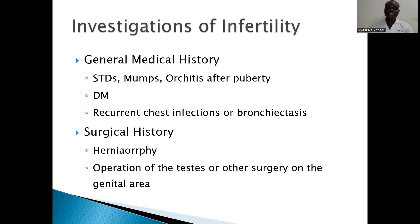When we talk about the general medical history, we shall ask about sexually transmitted diseases. We talk about mumps and orchiditis after puberty. Medical history including diabetes and recurrent chest infection will help us, because mumps causes orchiditis and this person ends up with infertility. That is why we shall take the medical history.